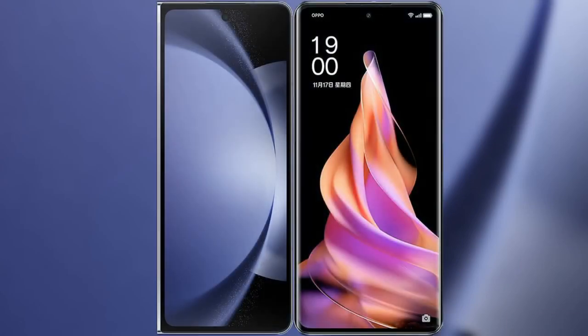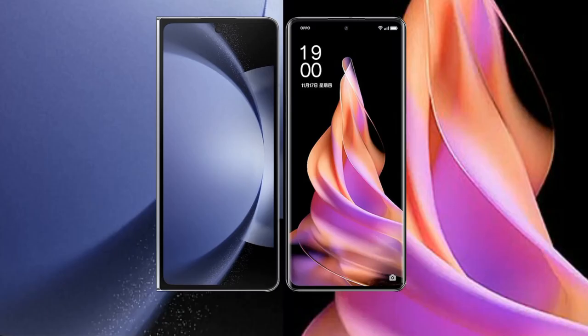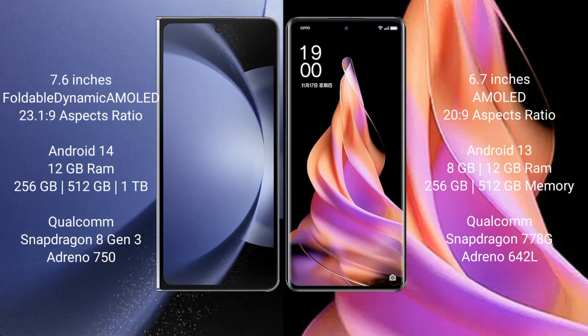We will compare the new Samsung Galaxy Z Fold 6 with OPPO Reno 9. Samsung Galaxy Z Fold 6 comes with a 7.6-inch foldable dynamic AMOLED display. OPPO Reno 9 features a 6.7-inch AMOLED display.